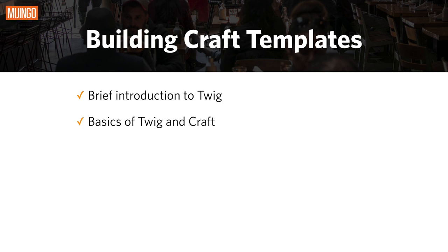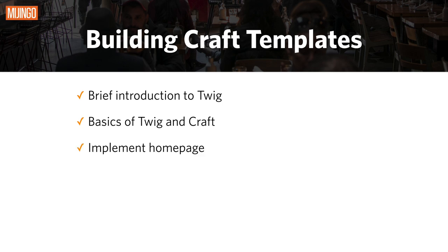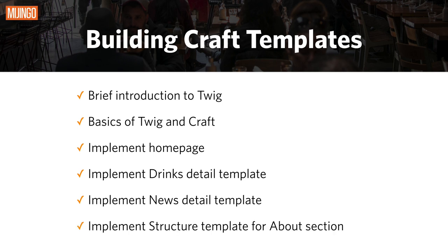Then we'll move into the actual implementation. We will build out the homepage for the Crafty Coffee site, the detail page for the drinks, the detail page for the news items, and we will also build a structure page for the About section.